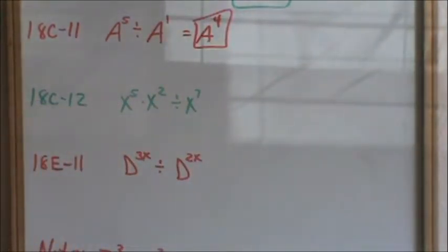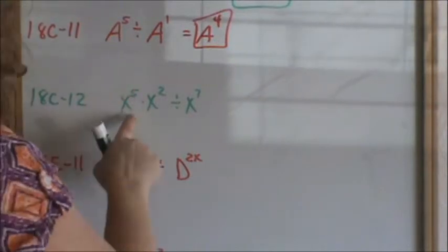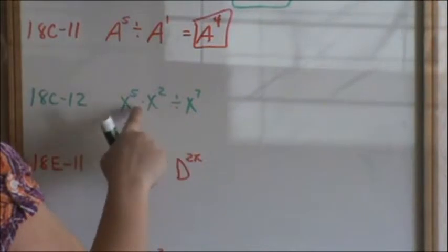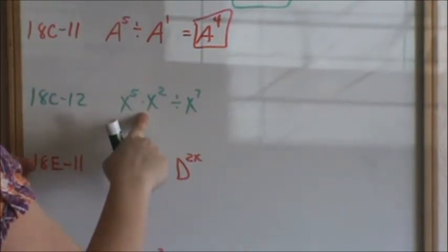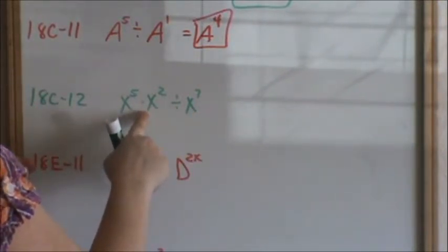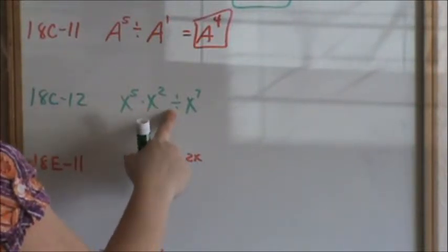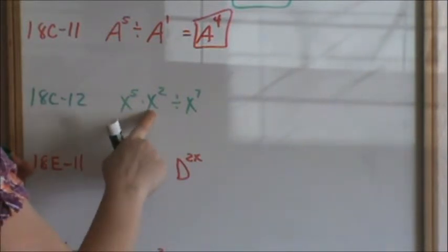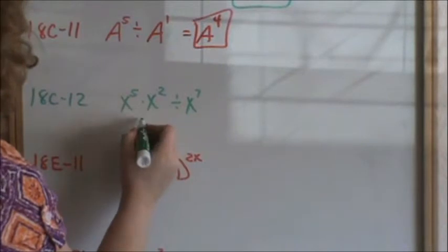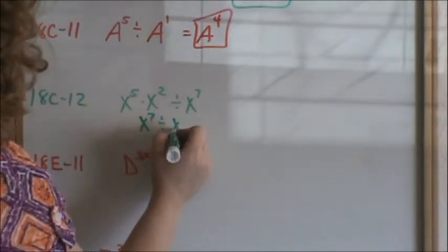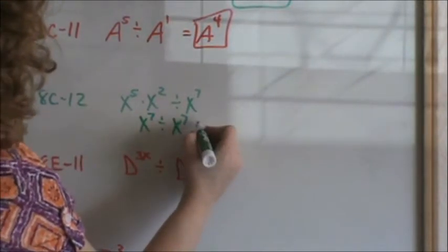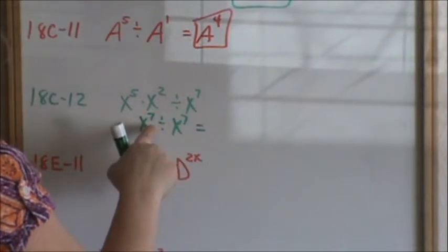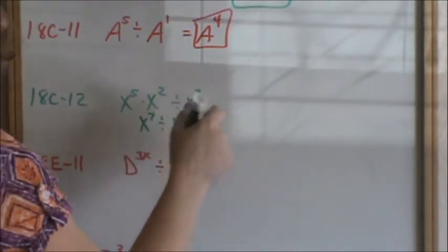Looking at 18c number 12, we are multiplying these two first, then we are dividing. We have the same bases. So in the world of PEMDAS, when you only have multiplication and division left, you do it from left to right. So doing our multiplication first, we have the same base. So that means we add our exponents. That would be x to the 7th divided by x to the 7th. When you are dividing and you have the same bases, you now subtract your exponents. So x to the 7th, 7 minus 7 is x to the 0.